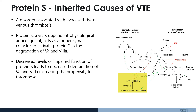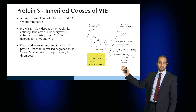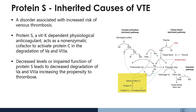Decreased levels or impaired function of protein S leads to decreased degradation of factors V and VIII, and that will drive the clotting cascade to generate thrombin, fibrin, and blood clots.